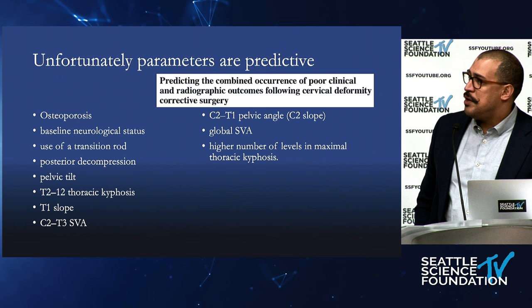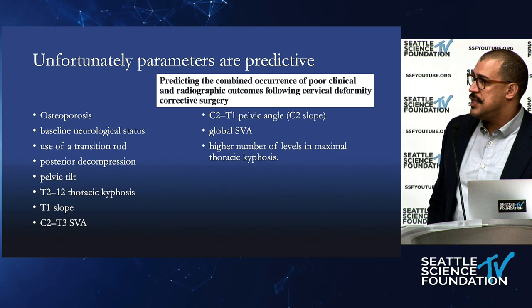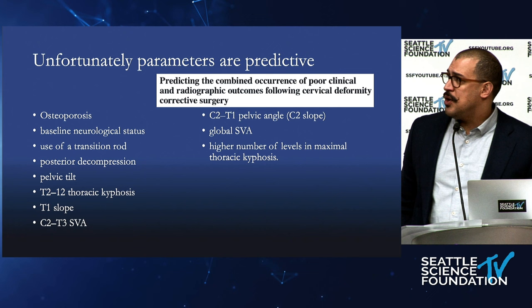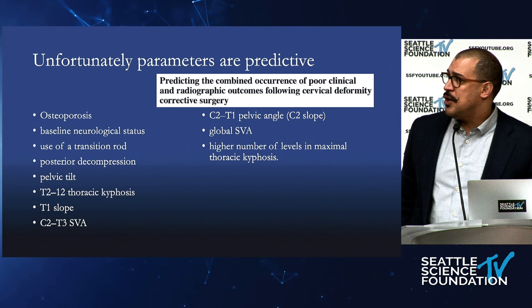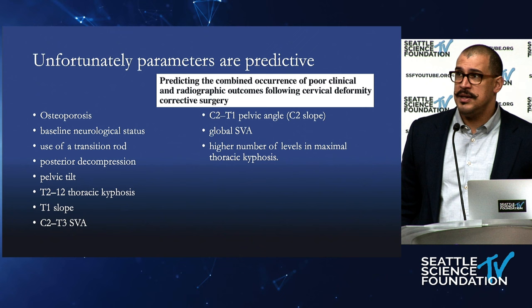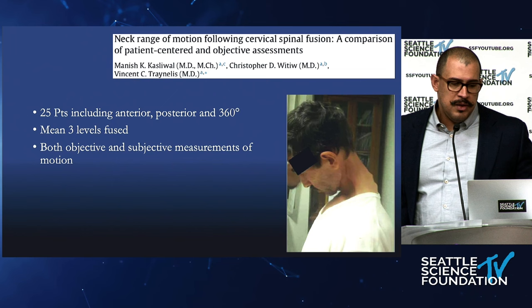This is from ISSG looking at parameters predicting radiographic and clinical poor outcomes. Looking at this laundry list, very few actually have to do with the cervical spine — global SVA, thoracic kyphosis. If we don't take a holistic approach, we may think we didn't do a good surgical job in the cervical spine, but many of these things reflect general spine disease. If we think we're going to fix global alignment with just cervical surgery, we may need to go further into the thoracic spine, otherwise we're just buying time.